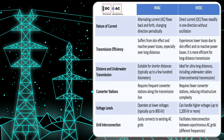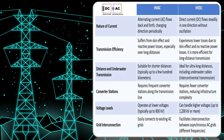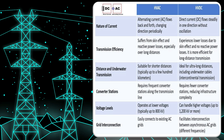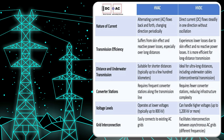Regarding lower losses, the losses of HVDC transmission lines are approximately 3.5% per 1,000 km, while for HVAC transmission the figure is approximately 6.7% for comparable lines.